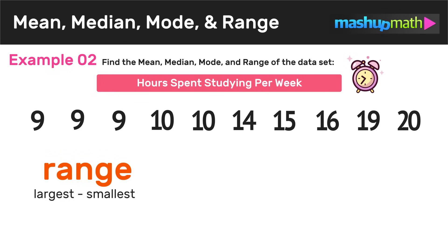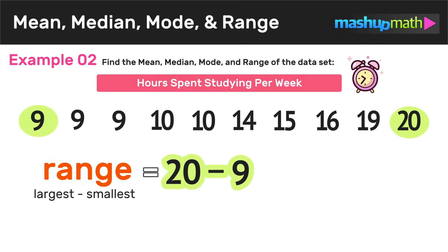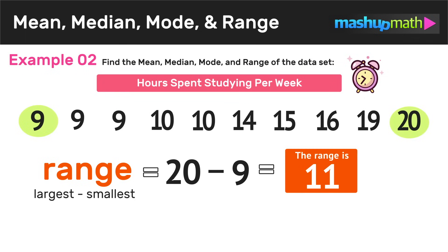And now the last step is to find the range of the data set, which is just the difference between the largest and smallest values. So to find the range, we take the largest value 20 and subtract the smallest value nine. We're left with a difference of 11, and so we can conclude that the range of the data set is 11.